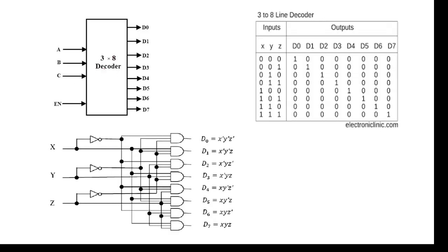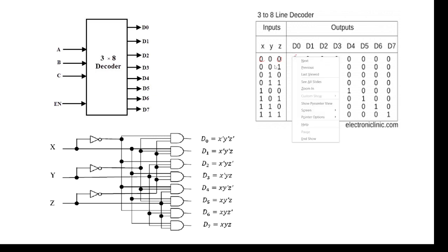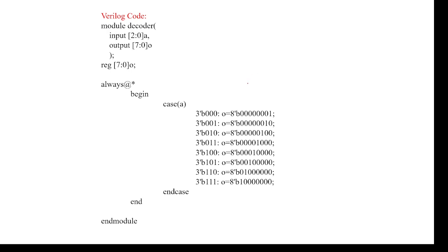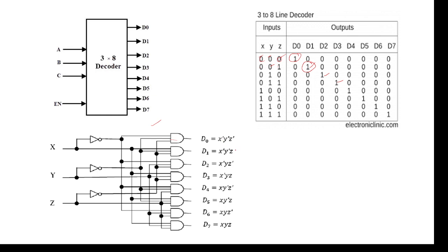For the 3-to-8 decoder, if there are three inputs we get eight outputs. Looking at the truth table: when inputs are 000, output d0 is selected; when inputs are 001, d1 is selected; when inputs are 010, d2 is selected; when inputs are 011, d3 is selected. For the circuit, d0 equals x-bar·y-bar·z-bar, and d1 equals x-bar·y-bar·z.